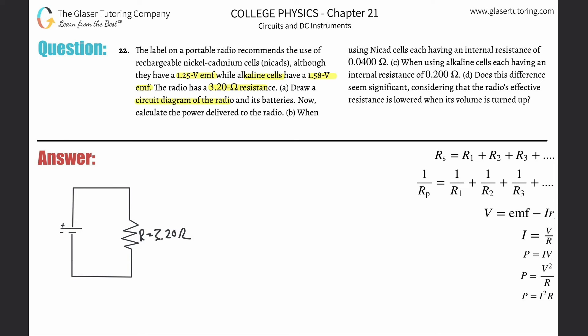This represents the resistance of the radio, so we label it 3.20 ohms. Part B asks us to calculate the power delivered to the radio when using NiCad cells, each having an internal resistance of 0.04 ohms. It says 'each having' — honestly I don't know if there are two, three, or more batteries — but the assumption is one. If there were more, you'd just add them all together.